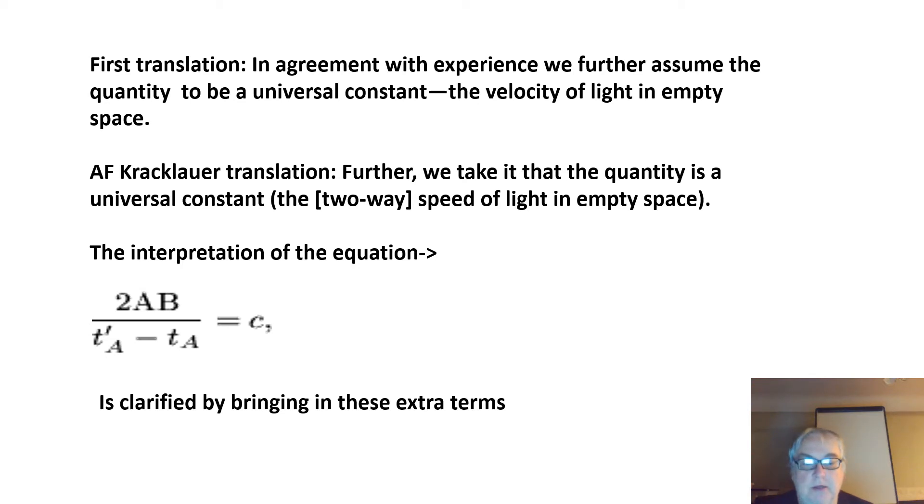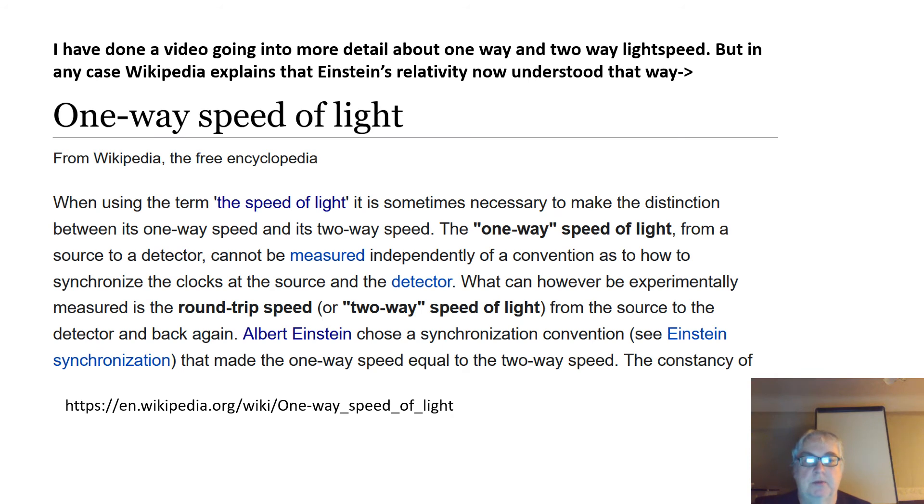The equation is then being clarified with these extra terms of one-way and two-way light speed. I've done a video going into detail about one-way and two-way light speed, but in any case, Wikipedia explains that Einstein's special relativity is now understood that way—by the two-way and the one-way light speed.